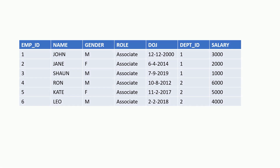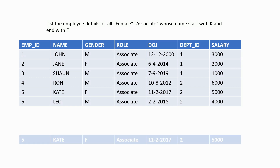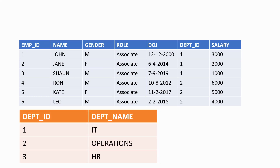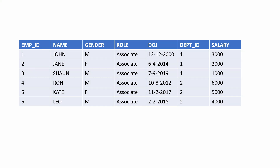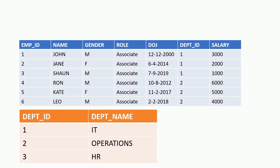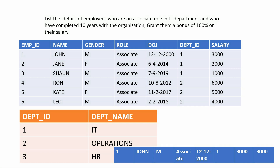In the fifth question, we need to list female employees in an associate role with a name starting from K and ending with E. In the sixth question, we need to identify departments which do not have any employees assigned to them. In the seventh question, we need to identify the employee with the fourth highest salary across the entire organization. In the eighth question, we need to identify employees in an associate role in the IT department who have been with the organization for more than 10 years and grant them a 100% bonus on their salary.